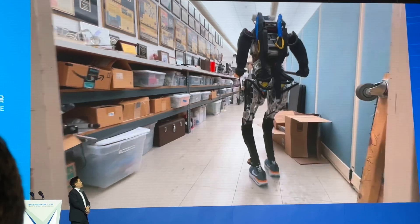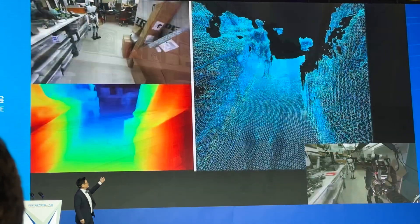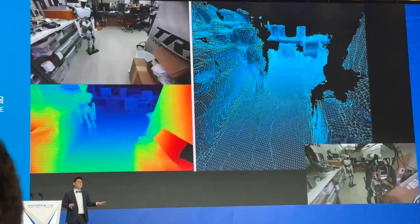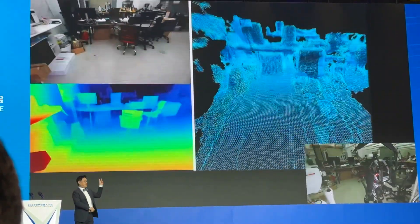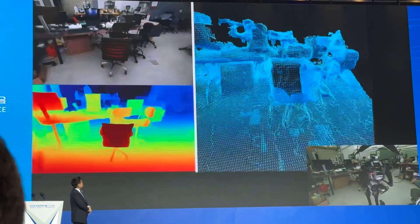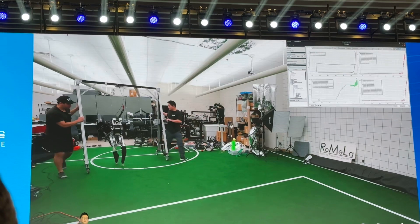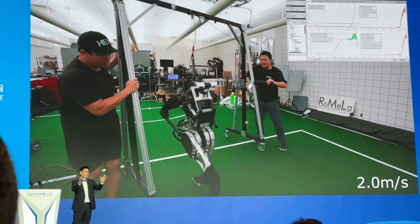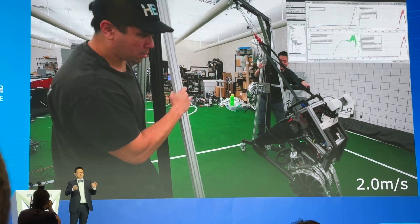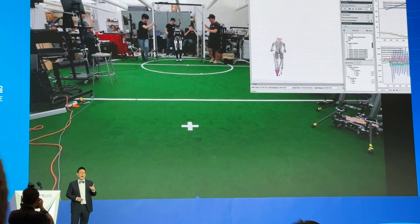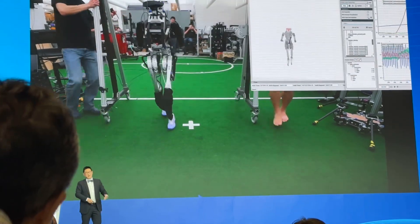You might be curious what the robot is actually seeing. The robot is understanding the environment using its sensors — in this case, a stereo camera. This robot can walk up to 2.1 meters per second. I believe this is the fastest walking humanoid robot in the world at this point. And also it can run — but we do not know how fast it can run because we don't have enough space in the lab right now.